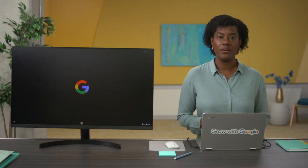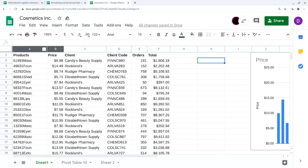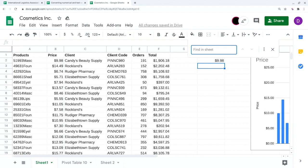One thing these businesses all have in common is that they can use VLOOKUP to help them achieve these goals. VLOOKUP stands for Vertical Lookup — basically a function that searches for a certain value in a column to return a corresponding piece of information. Earlier, we used VLOOKUP to take the value in one cell and search for a match in another — matching a product code made up of numbers and letters in one spreadsheet to the actual name of the product in another.